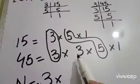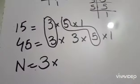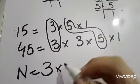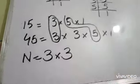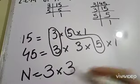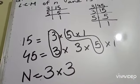Then 3, 3 is not like common, so 3 and 3 these are the factors of n. So we are going to multiply these factors and then we will find the value of n.